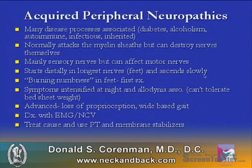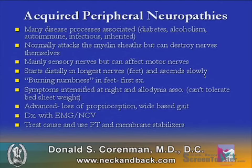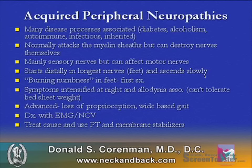Patients with acquired peripheral neuropathies have many associated disease processes: diabetes, alcoholism, autoimmune diseases, infectious diseases, and even inherited diseases such as Charcot-Marie-Tooth. Normally these diseases attack the myelin sheaths but can destroy the nerves themselves. Sensory nerves are the most commonly involved, but peripheral neuropathies can also affect motor nerves. The condition starts distally in the longest nerves, which go to the feet, and ascends slowly.